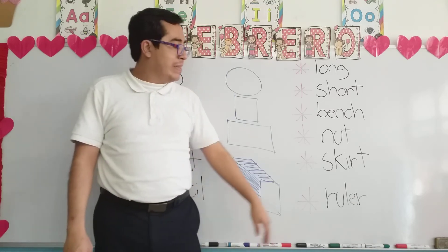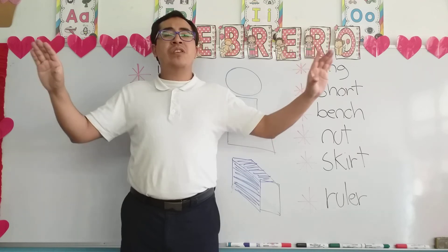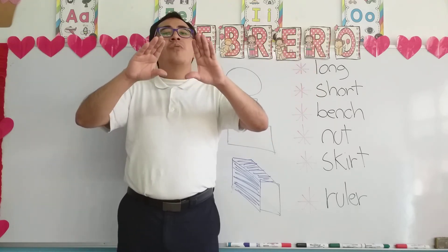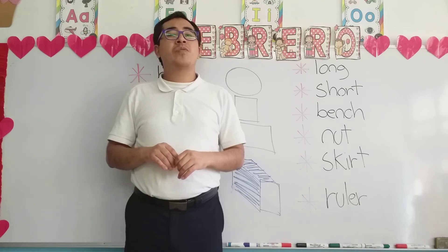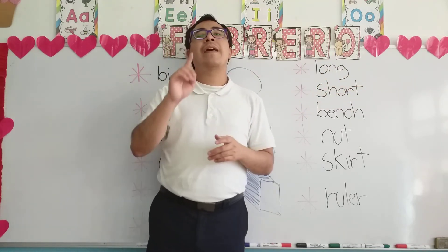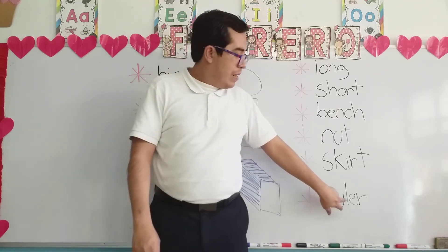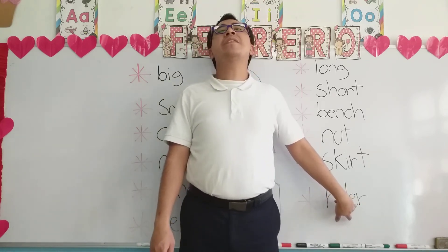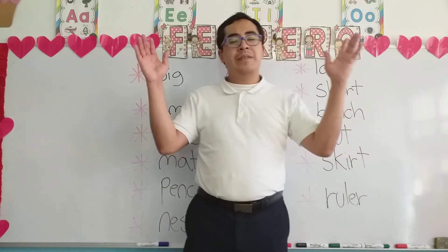One more word, and that's it for the second activity: 'ruler.' The ruler is an object of measure — we use it to see if other objects are long or short. Ruler in Spanish: regla. Recuerden que una regla es un objeto de medición que utilizamos para medir otros objetos, para saber si son largos o cortos. Letters for 'ruler': R of Robot, U of Unicorn, L of Lupita, E of Ernesto, R of Robot — and the word says 'ruler.'